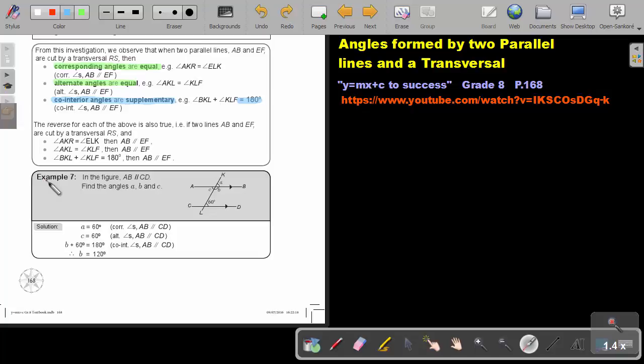Let's go through example 7. In the figure, AB is parallel to CD. Find the angles A, B and C. Now, always start at the angle given and see how you can transfer the information. So if I look at the angle, I say angle A. So look here. If you mark an F. Do you see my F? So if this is 60, then this one, angle A will be 60. Why? Because corresponding angles, AB is parallel to CD.